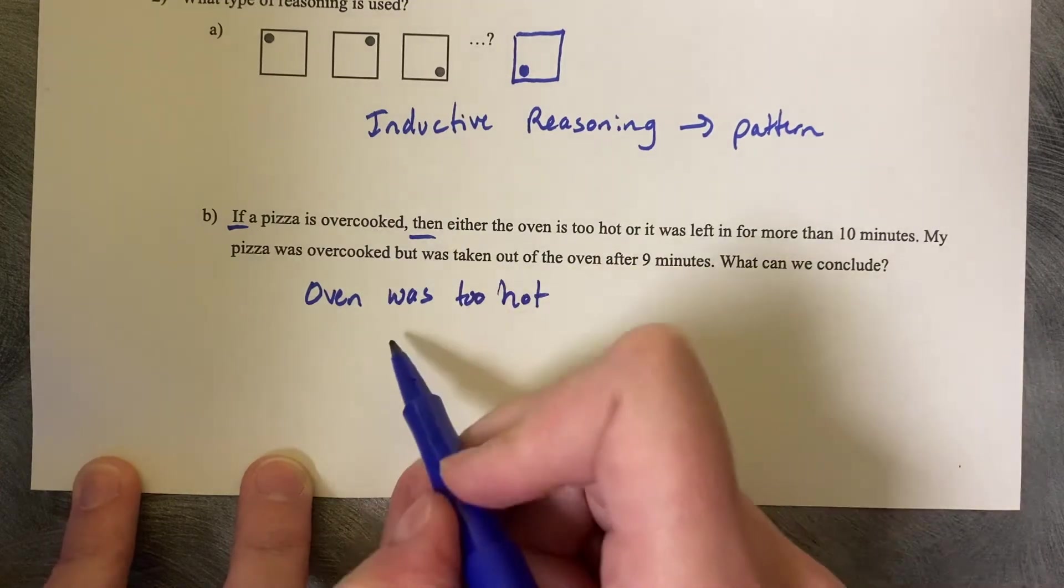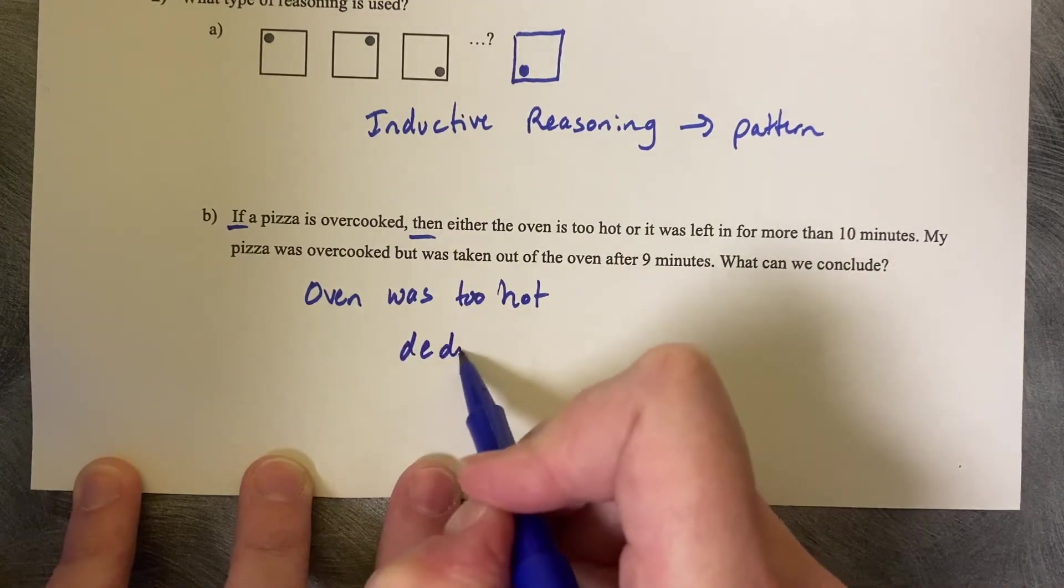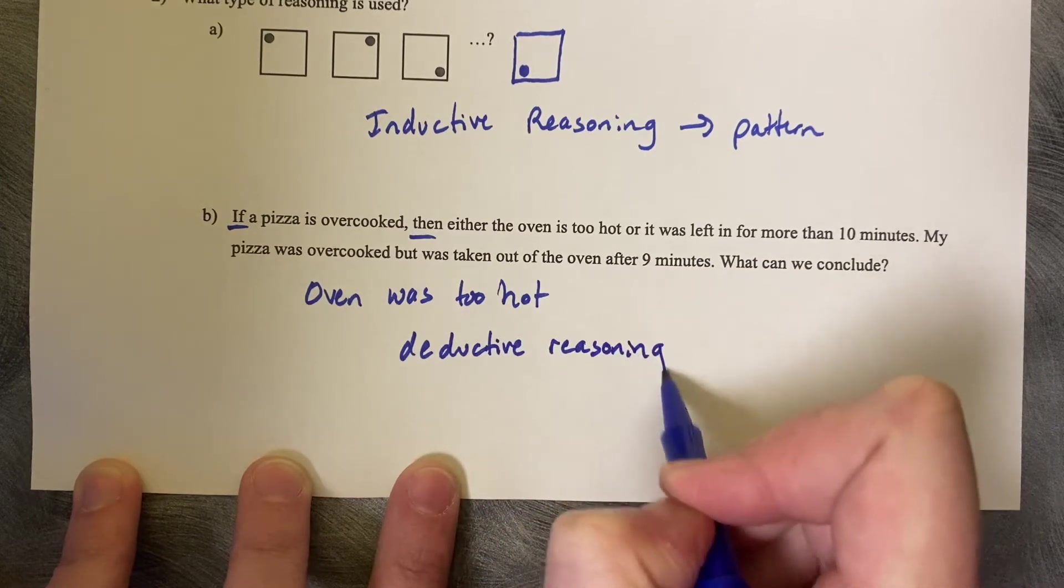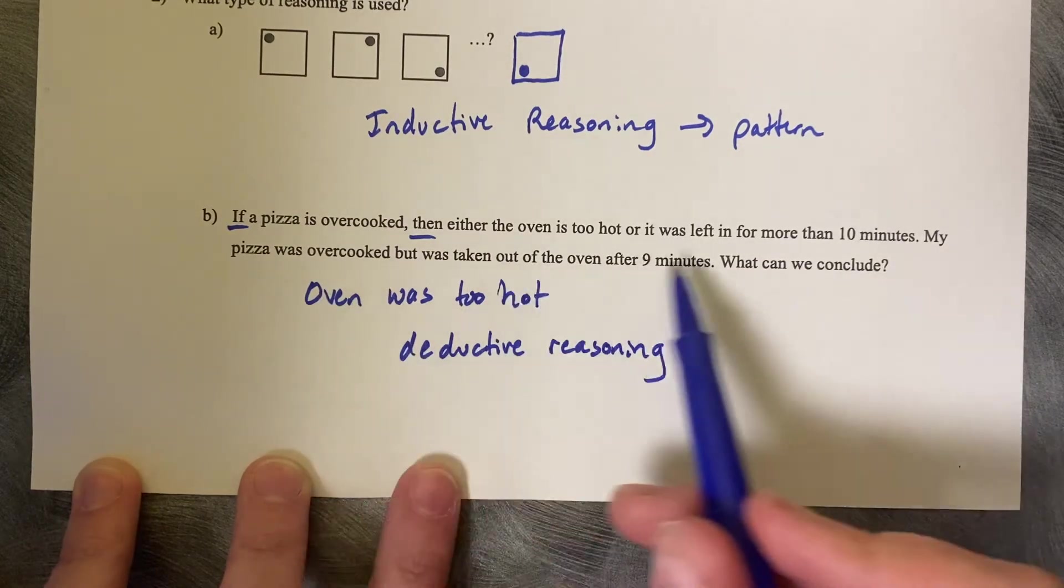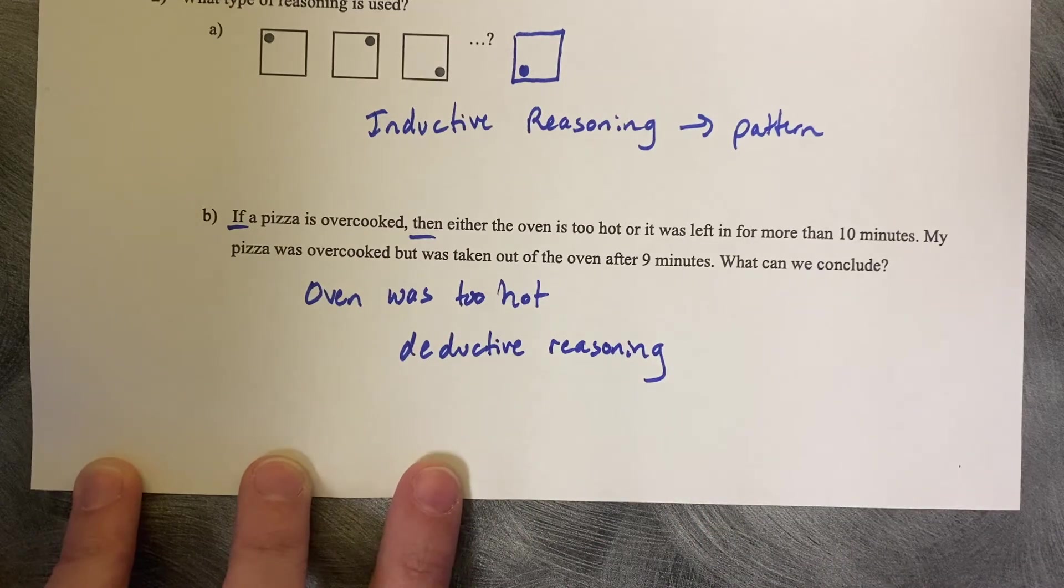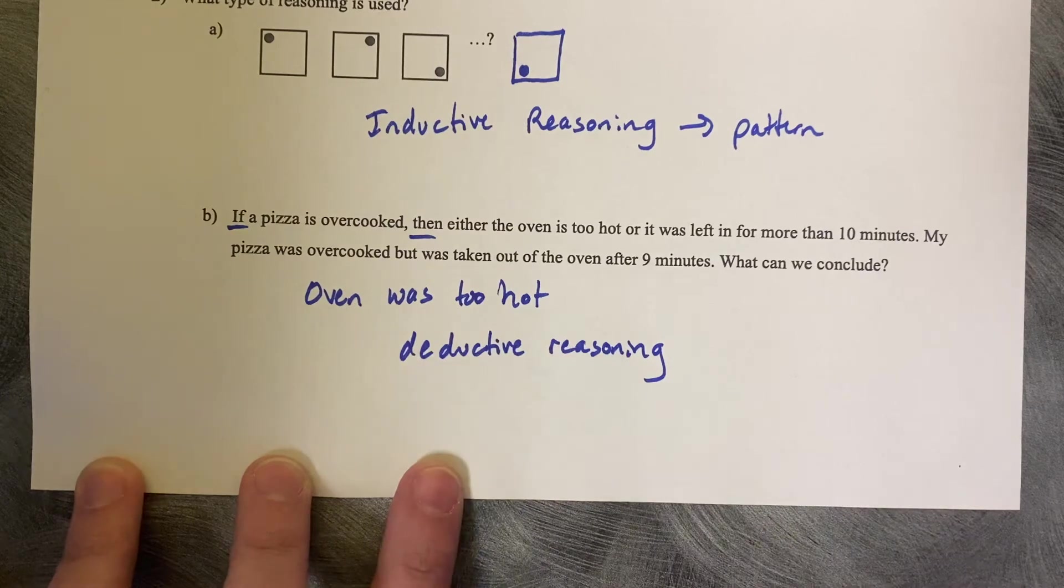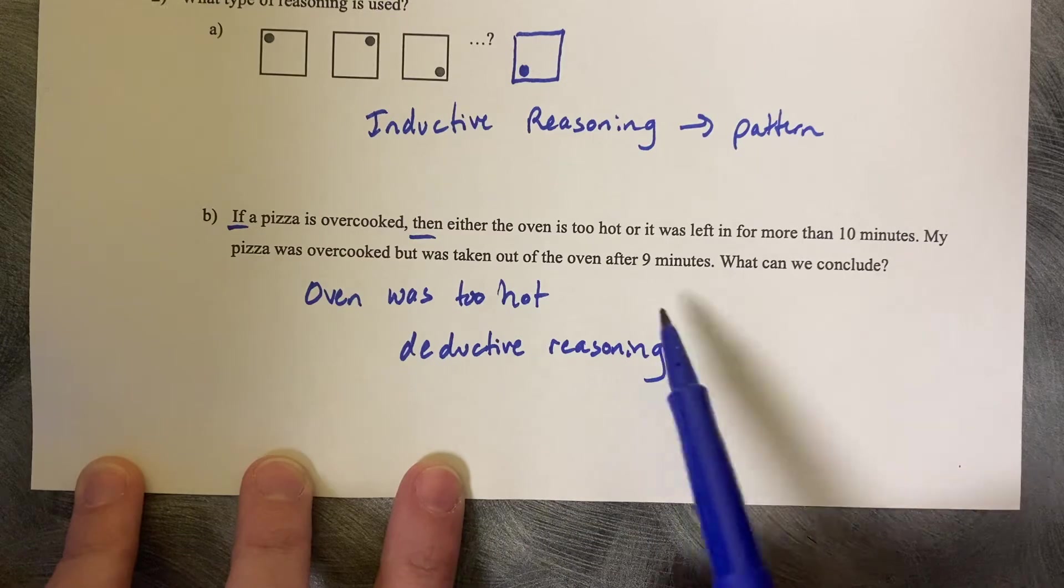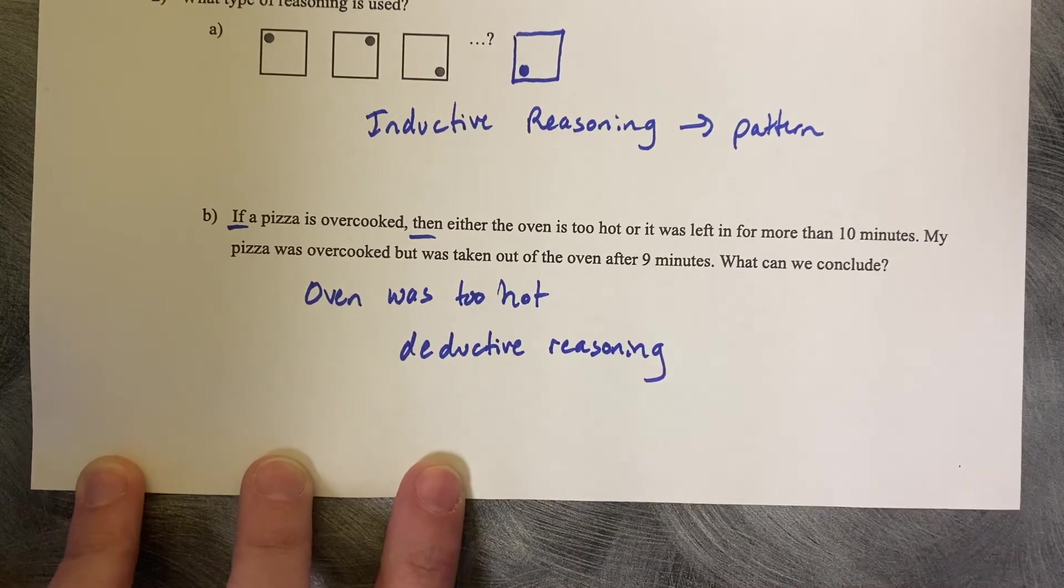How did we determine this? What can we conclude? We determined this with deductive reasoning. I used this conditional statement or this fact to help me decide that the oven was too hot. I eliminated one part of the conditional statement based on facts from this statement. This is deductive reasoning.